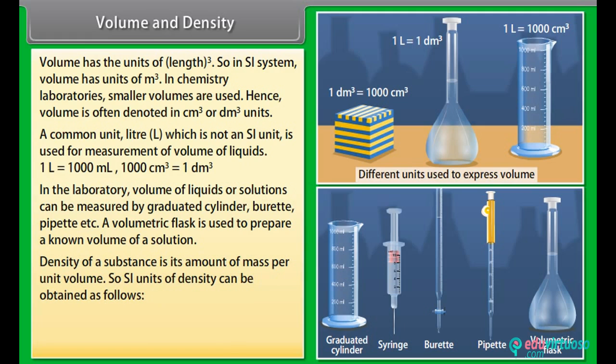Density of a substance is its amount of mass per unit volume. So, SI units of density can be obtained as follows: SI unit of density is equal to SI unit of mass upon SI unit of volume, which is equal to kg m^-3 or g cm^-3.